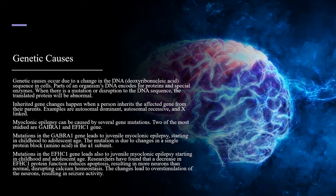Myoclonic epilepsy can be caused by several gene mutations. Two of the most studied are GABRA1 and EFHC1 gene. Mutations in the GABRA1 gene lead to juvenile myoclonic epilepsy starting in childhood to adolescent age. The mutation is due to changes in a single protein block in the A1 subunit.